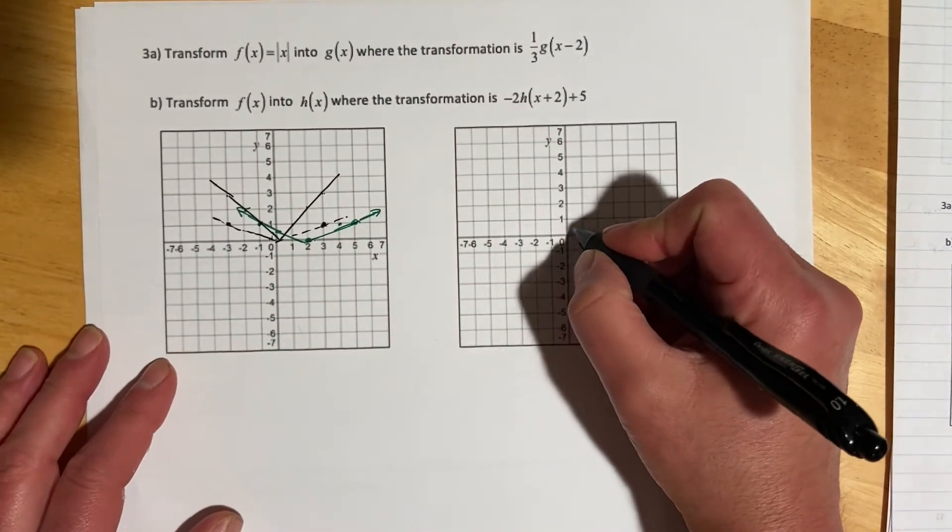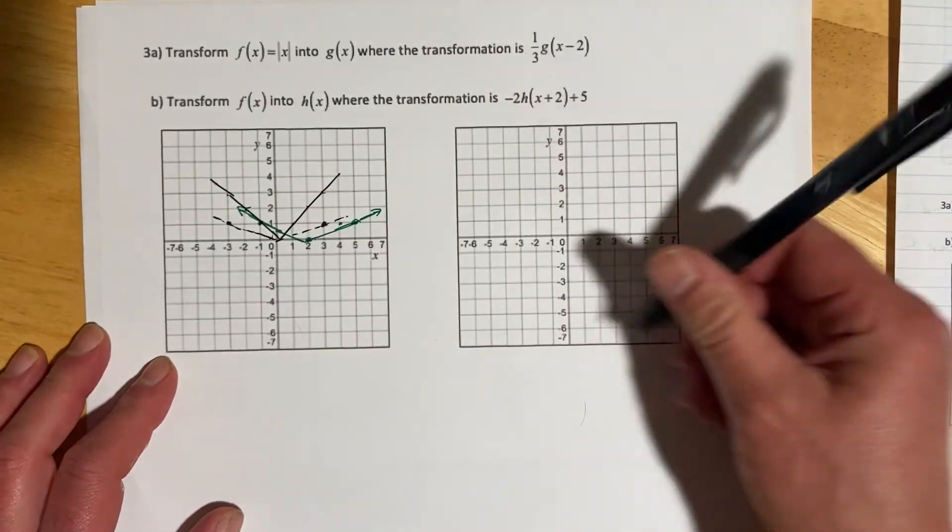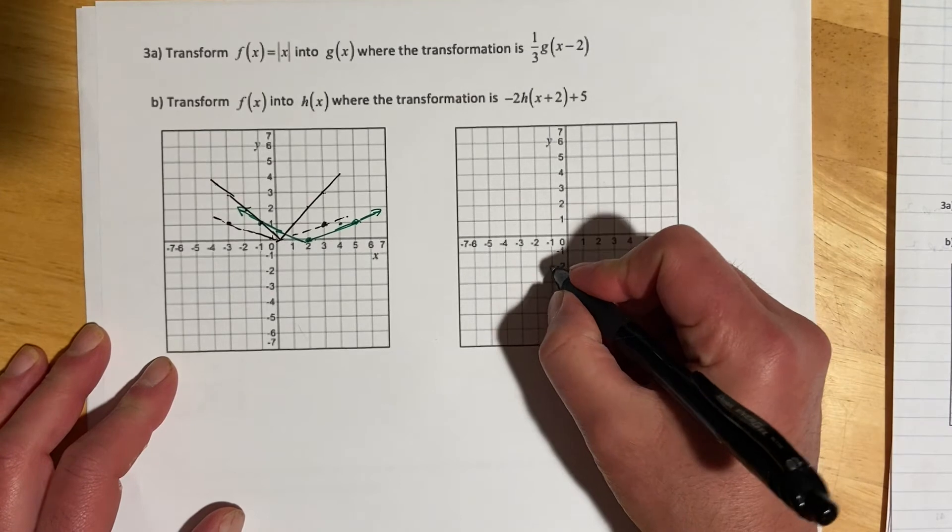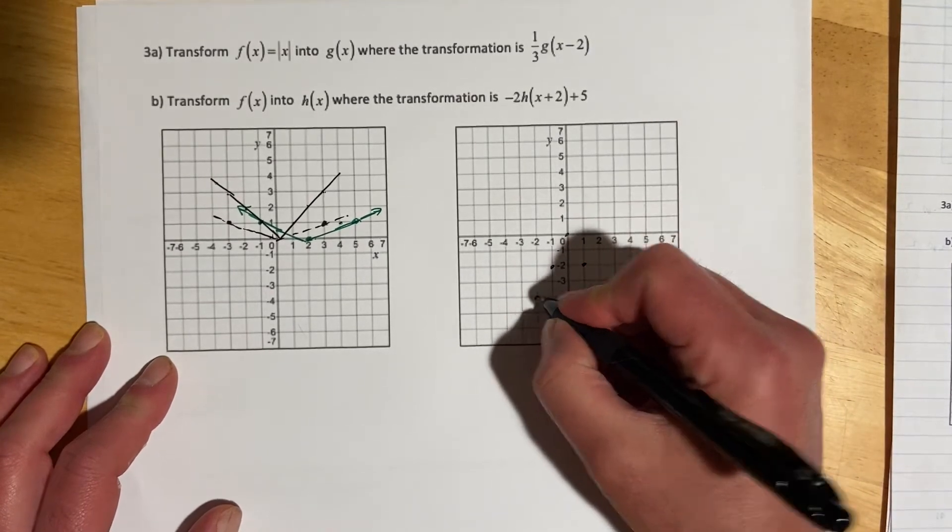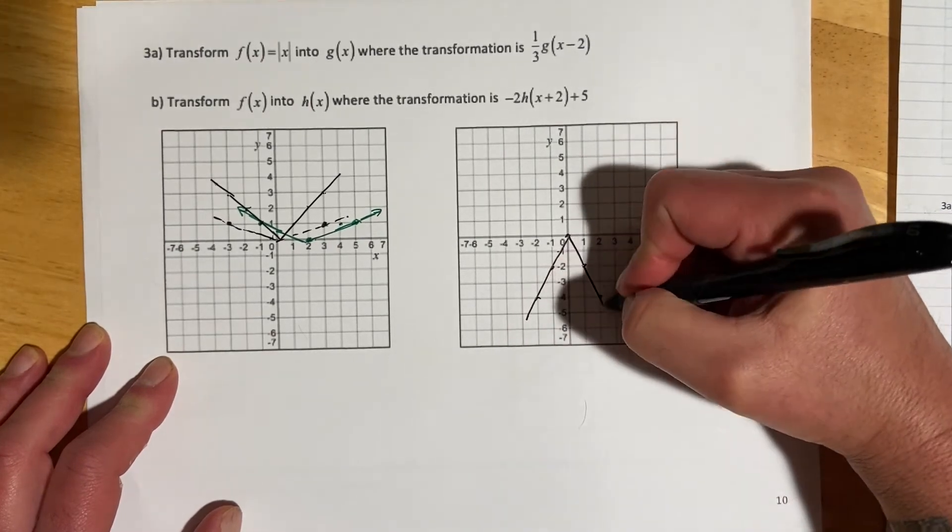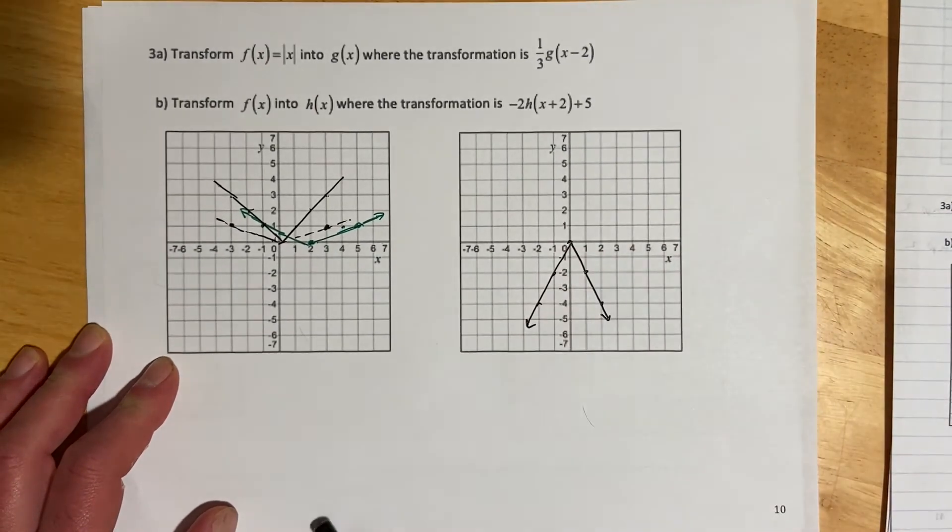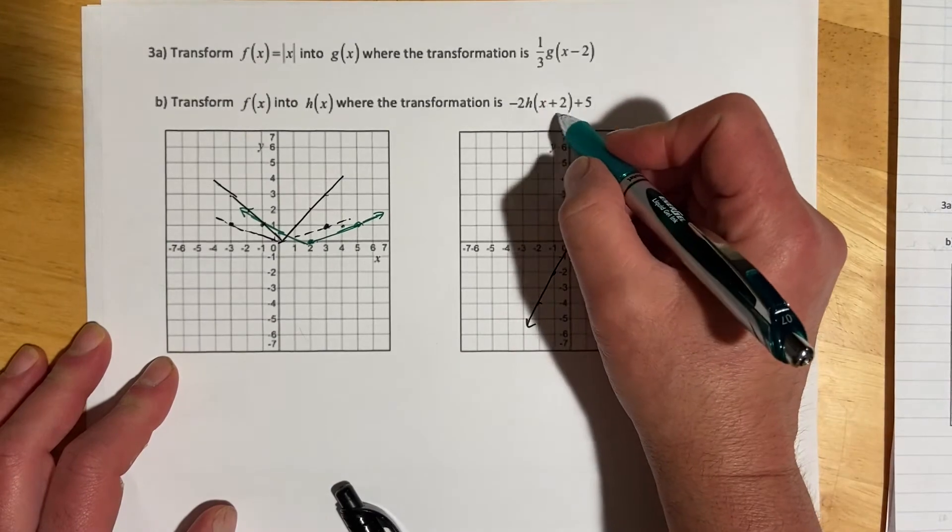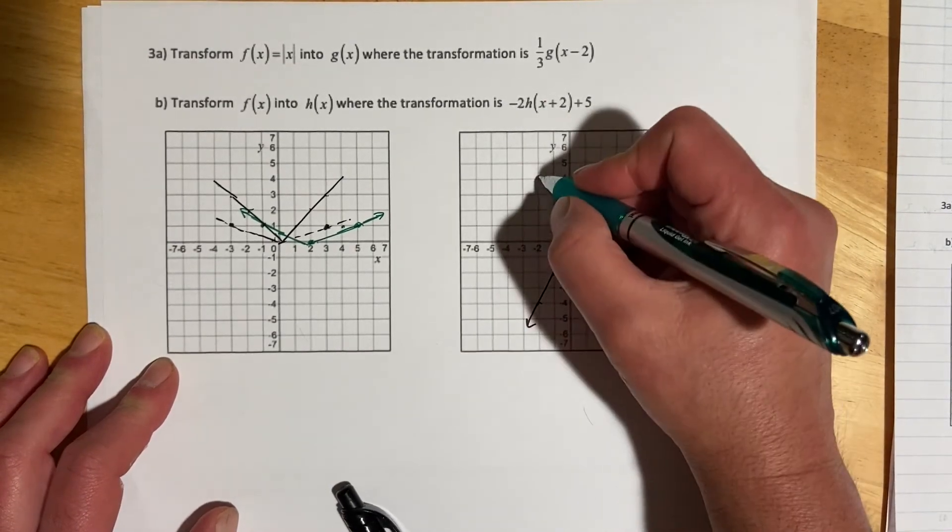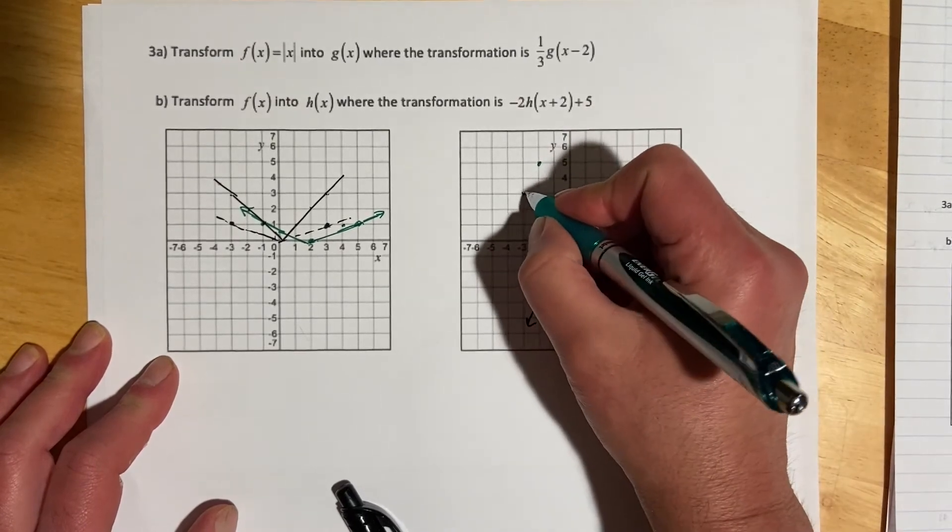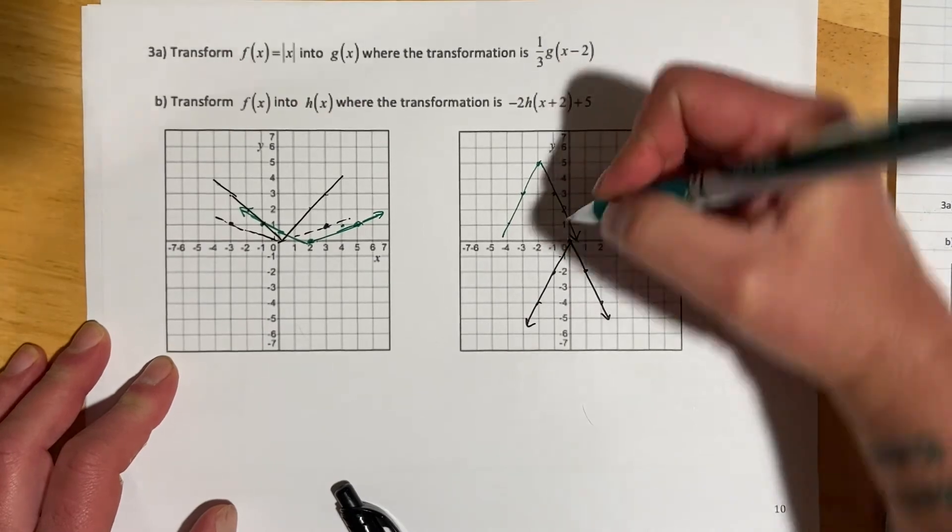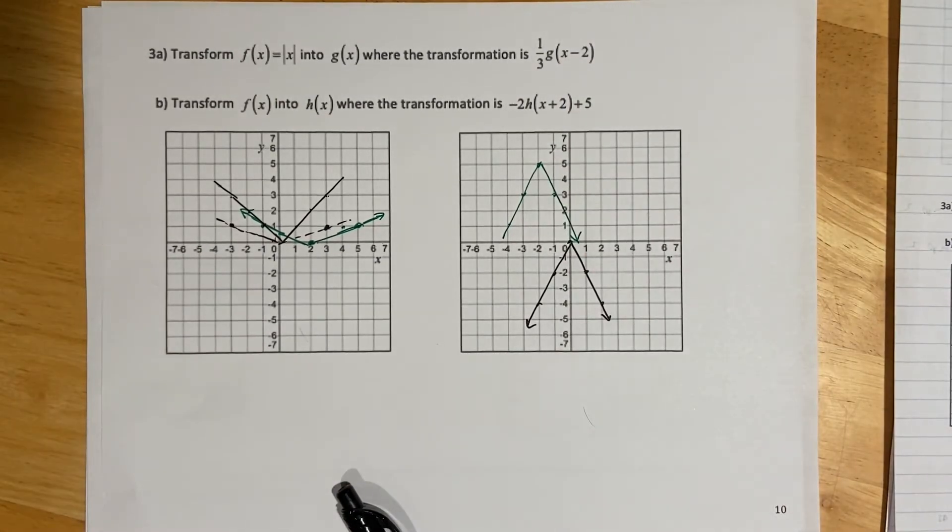The parent function is the same one I keep drawing, and then the negative 2 is going to reflect and stretch by 2. That's basically on this one just changing our slope to 2, or negative 2. Then we'll pick this one up and go left 2 and up 5.